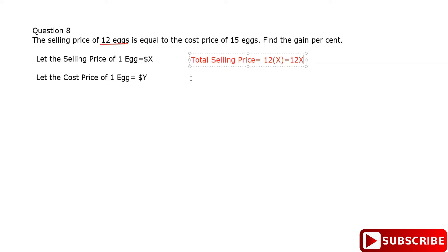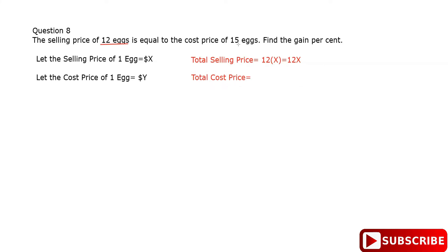Now the total cost price — we bought one egg for y dollars, but we're buying 15 eggs, so the total cost price is 15y.